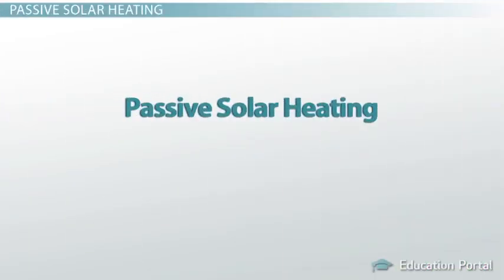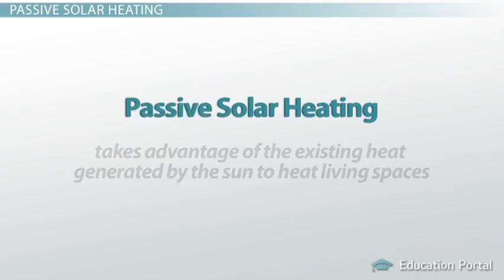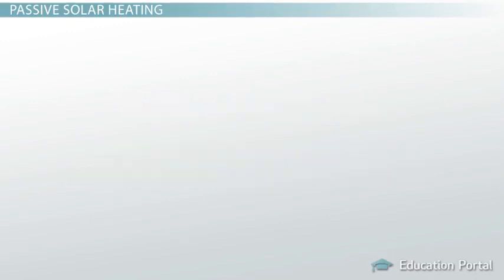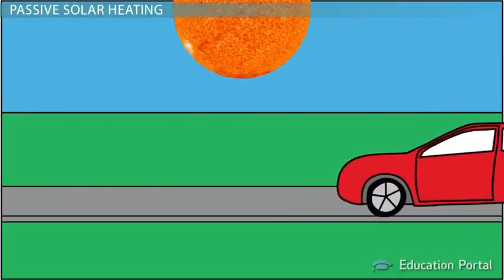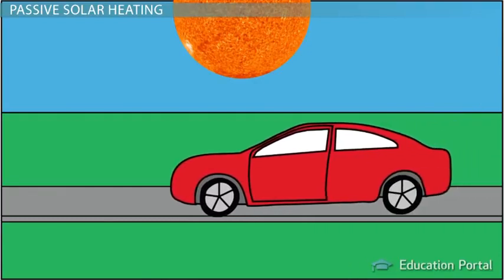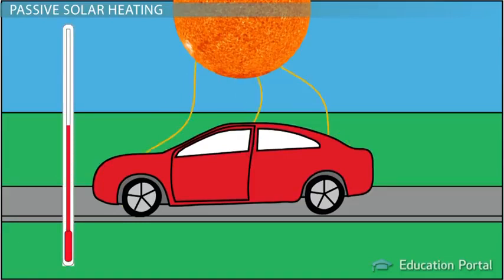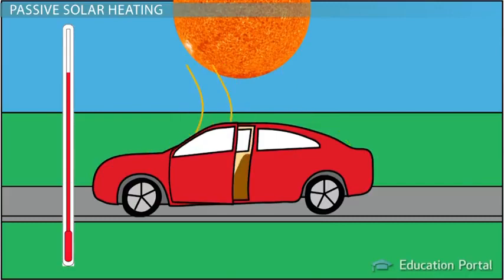Passive solar heating, as you may have guessed, is passive. In other words, it takes advantage of the existing heat generated by the Sun to heat living spaces. We have all witnessed passive solar heating when we climbed into a car on a sunny day. Rays from the Sun entered the car windows and were absorbed by the car's seats, panels, and floor. And this heat got trapped in the car and warmed the interior.